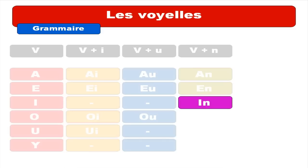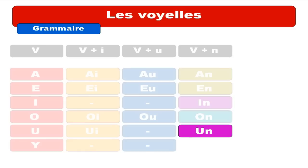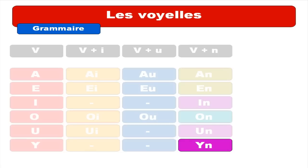And then you get the sound A. Repeat. A. Here you will have this O. O. And then you will get this A. It's actually the same as previously with IN. Same sound: A. And then A — same sound as IN and UN. So for these three ones, the sound is A.